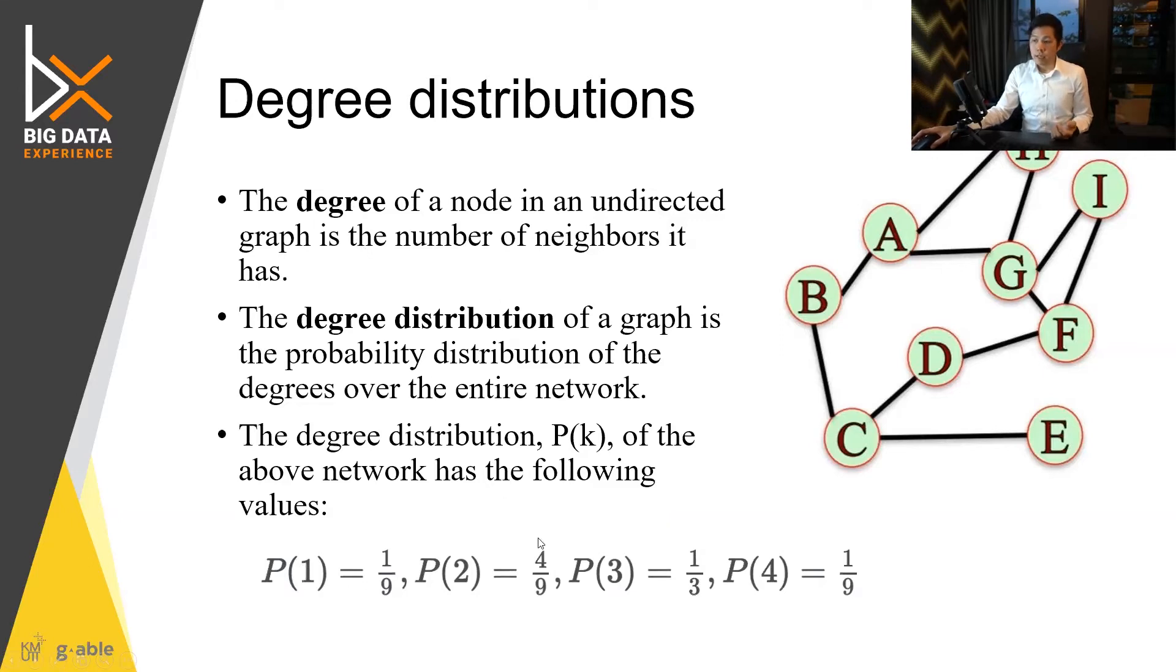So the degree of the node of the undirected graph will be the number of neighbors that it has. And the distribution would look like down here for this graph. Let me use this one, a laser pointer. It's actually a degree distribution. Here is the number of nodes, actually it's the probability over the degree over the entire network.